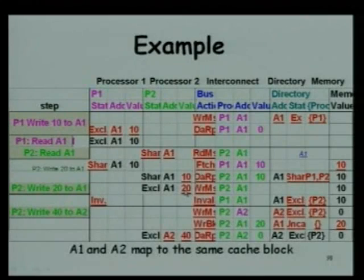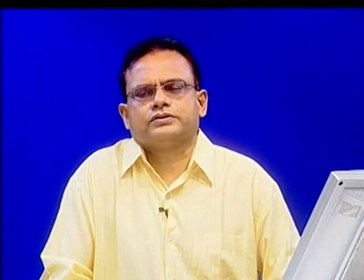Why does a write miss require a data reply? Because you are updating only one value, but a page has several values — one page consists of a large number of addresses. If you are writing only one value, what about the other values? Where will you get them? Next time you replace the block, which values will you write back? That is why the full data must be supplied.